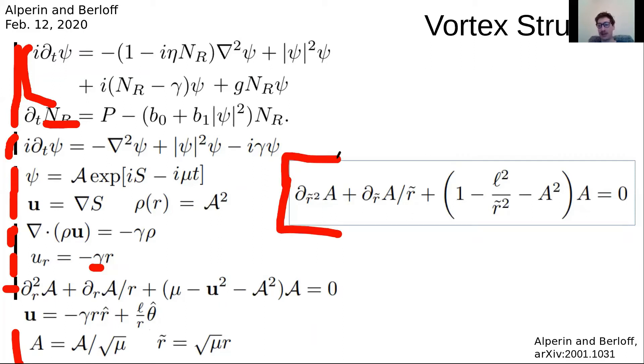So if we rescale, this gives us this final form of a reduced equation, where there's an effective external potential—an effective harmonic potential—given by and set by the dissipation rate.